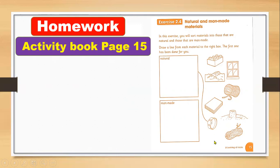For homework, go to page 15 in your activity book. You have to look at the materials — glass, rope, diamond, water, and sea — and choose which material is natural and which is man-made. Thank you so much, take care, goodbye!